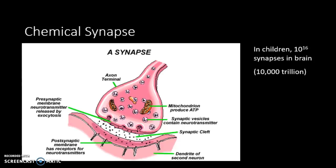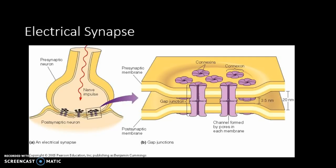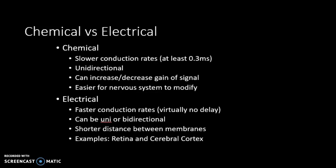Chemical synapses are unidirectional and can increase or decrease signal gain through hyperpolarization or hypopolarization, and are easier for the nervous system to modify. Electrical synapses use gap junctions where the electrical signal travels directly across, are faster, can be uni- or bidirectional, and operate over shorter distances. Examples include the retina and cerebral cortex.